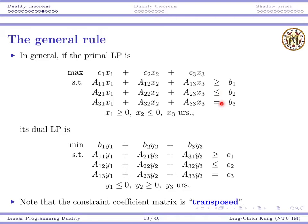Regarding the numbers: primal objective coefficients become the dual right-hand side. Primal right-hand side becomes the dual objective coefficients. Primal constraint coefficients are still the dual constraint coefficients, but the matrix is transposed. For example, A12 goes to the transposed position, and A23 goes to its transposed position. Every dual constraint does a comparison for one primal variable, which is why the dual constraint consists of A11, A21, and A31. The coefficient matrix must be transposed.